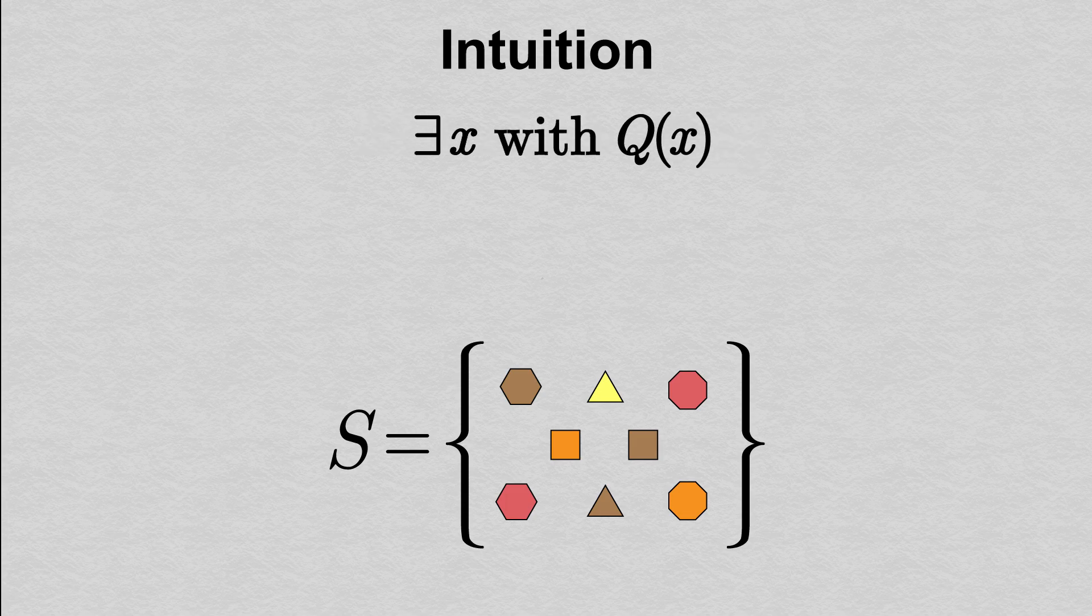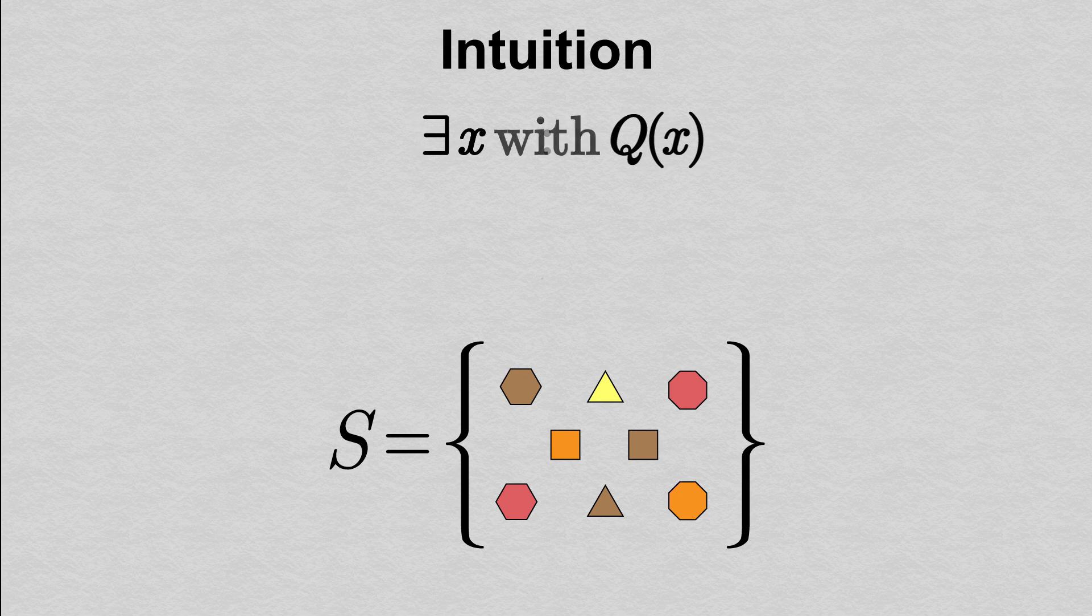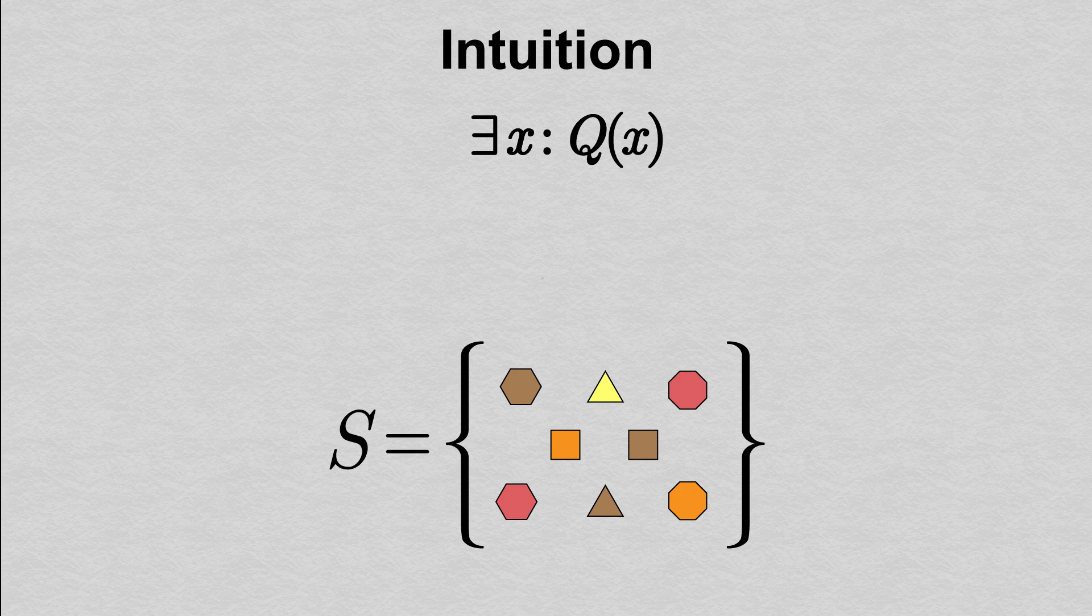It could even be a colon, or we could leave it off altogether. But no matter how we write it, the logical interpretation of this statement is the same. Our statement that one of the shapes in our set S is a hexagon can be written as: there exists x in S such that x is a hexagon.